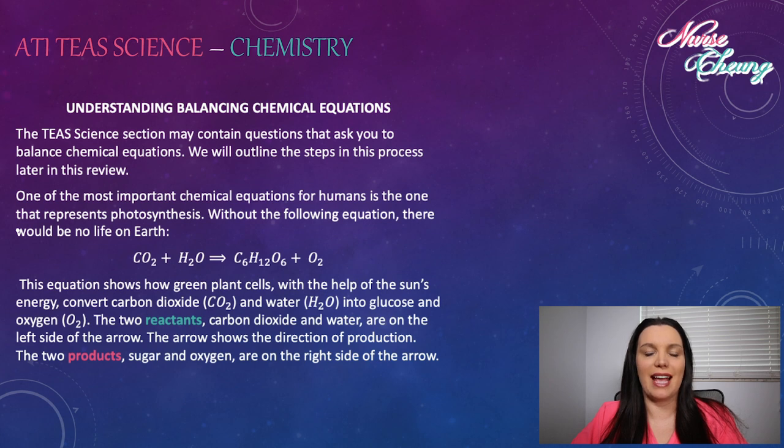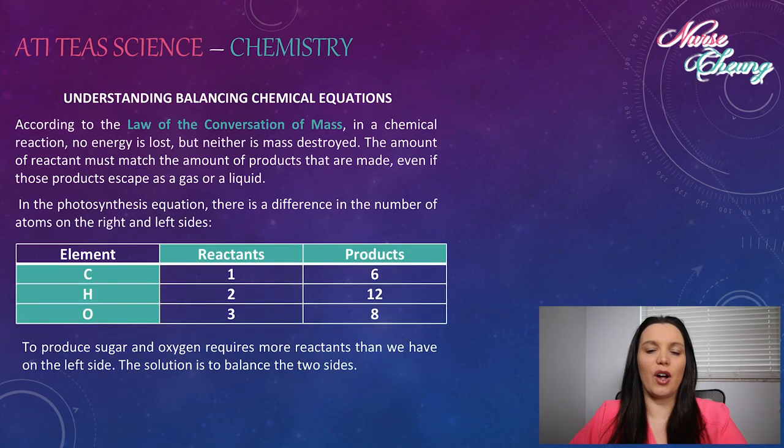The TEAS science section may contain questions that ask you to balance chemical equations. We will outline the steps in this process later in this review. One of the most important chemical equations for humans is the one that represents photosynthesis. Without the following equation, there would be no life on earth. CO2 plus H2O is equal to C6H12O6 plus O2. This equation shows how green plant cells with the help of the sun's energy convert carbon dioxide and water into glucose and oxygen. The two reactants, carbon dioxide and water, are on the left side of the arrow. The arrow shows the direction of the production and the two products, sugar and oxygen, are on the right side of the arrow.